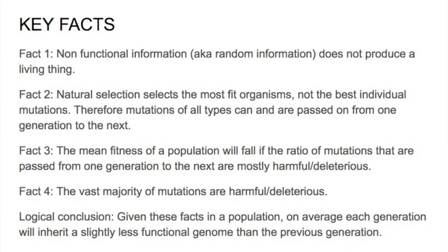So based on what we just saw, we can deduce a few key facts that act as the basis for my argument. The first fact is just that non-functional information, also known as random information does not produce a living thing. The next fact is that natural selection selects the most fit organisms, not the best individual or most fit mutations themselves. Therefore, mutations of all types can and are passed on from one generation to the next. The third fact is that the mean fitness of a population will fall over time if the ratio of mutations that are passed on from one generation to the next are mostly harmful. And lastly, the fact just is that the vast majority of mutations that are passed on are indeed harmful. So given these facts in a population, on average each generation will inherit a slightly less functional genome than the previous generation. This is not the evolution you were taught in school.